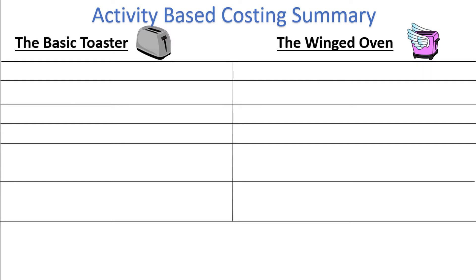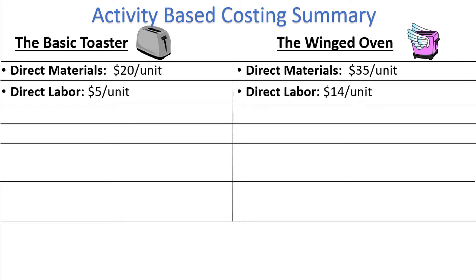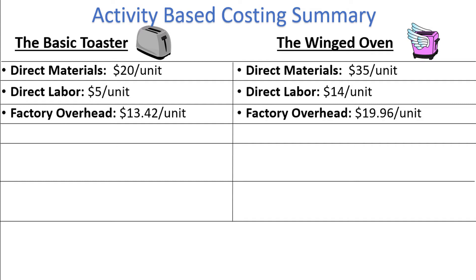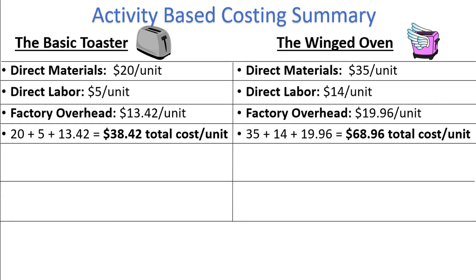Next, we need to calculate the total cost per unit by adding up the three product costs: direct materials, direct labor, and factory overhead. Direct materials and direct labor costs will be the same regardless of the overhead allocation method used. Adding in the overhead of $13.42 per unit for basic toasters and $19.96 per unit for winged ovens, the total cost per unit is $38.42 for the basic toaster and $68.96 for the winged oven.